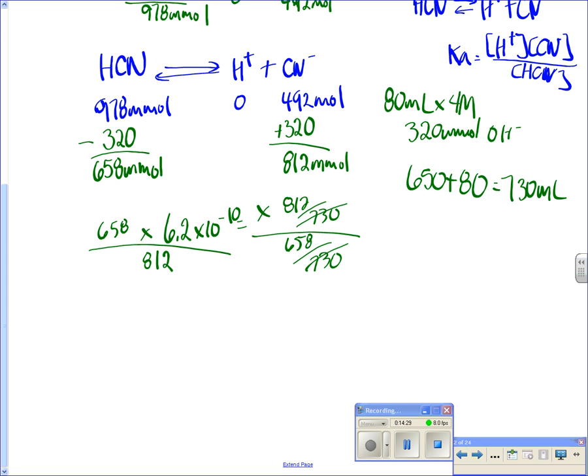So when I work this out again, I still have an H+. My X, which is my H+ value, comes out to be 5.02 times 10 to the minus 10.